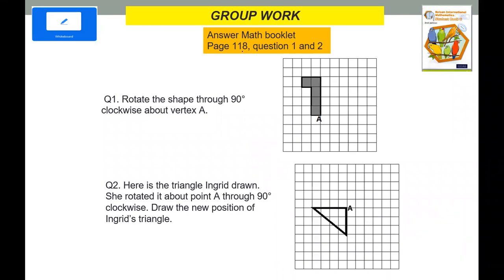In your math booklet page 118, question one and two. Rotate the shape through 90 degrees clockwise about vertex A. This is the vertex A. Since this is the vertex A, it will start like that — you start from here. So counting the units, it will go up there and connect — this is now the answer.